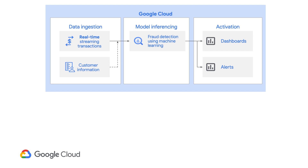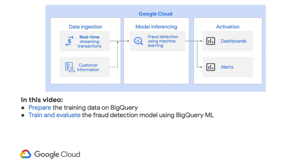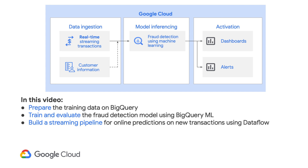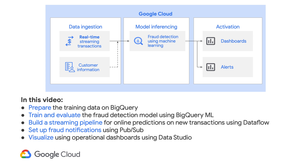In this video, we'll show you how to build a real-time fraud detection solution broken down into the following sections: how to prepare the training data in BigQuery; how to build the fraud detection model directly within BigQuery using BigQuery ML; how to build a pipeline to do real-time model predictions using Dataflow; how to set up alert-based notifications when fraud is detected using PubSub; and how to create interactive dashboards for business and technical operations using Datastudio. The code and instructions to follow this design pattern are all linked in the video description below.